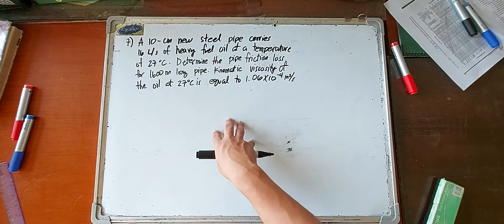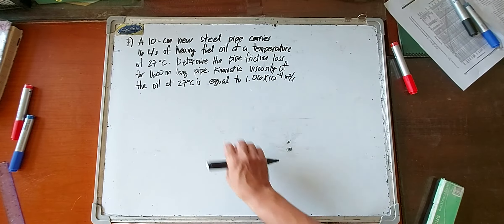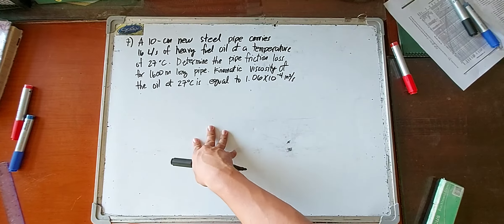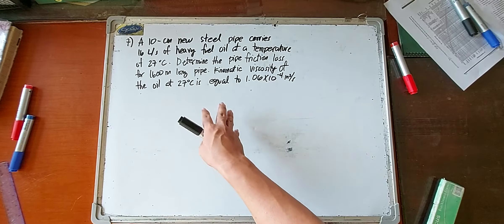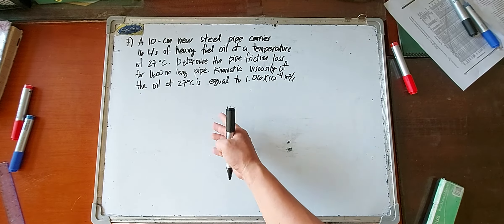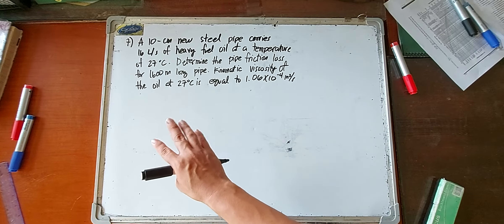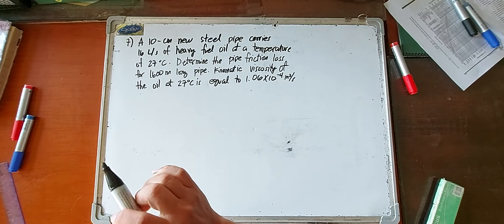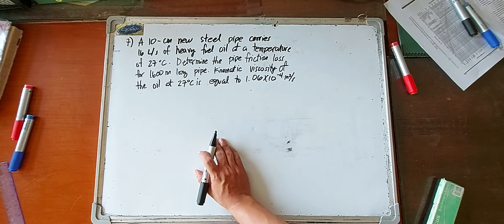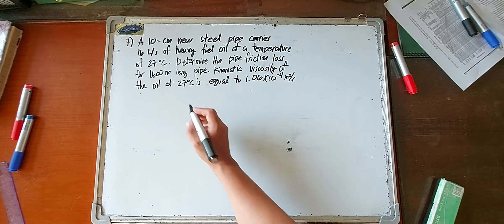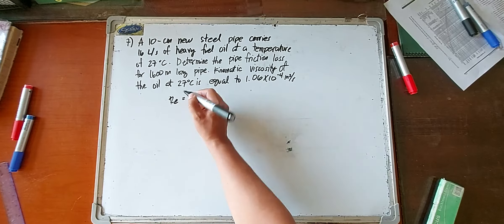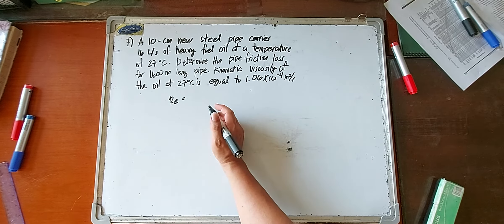This problem is most likely solved using the Darcy-Weisbach formula. First, we need to solve for the Reynolds number. As mentioned in our first discussion, if the flow is laminar we use one particular formula for the friction factor, and if turbulent with Reynolds number between 3,000 to 10,000 we use another. Since kinematic viscosity is given, we'll use the Reynolds number formula in terms of kinematic viscosity.